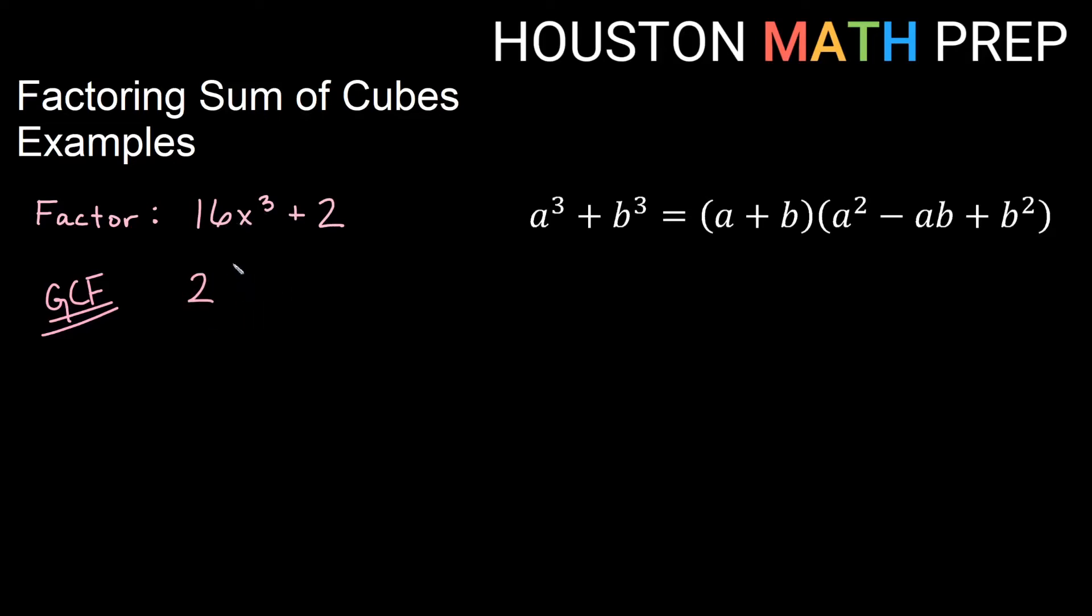We're going to go ahead and pull out 2 and have 8x³ + 1 left over after we factor that out. Now this is still a sum of cubes, so we need to factor more, not just the 2. So if I look what is being cubed here, this is actually 2x³. What is being cubed to get 1? 1 times 1 times 1 is 1. So we have 2x and 1 going in our formula.